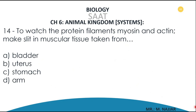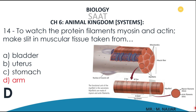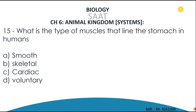Question number fourteen: protein filaments myosin and actin are found in muscular tissue taken from A) bladder, B) uterus, C) stomach, D) arm. The correct answer is D — arm. The muscles of the arm are skeletal muscles because they are attached to bone. Looking at the muscle fiber and myofibrils, you can easily identify the actin and myosin filaments present there.